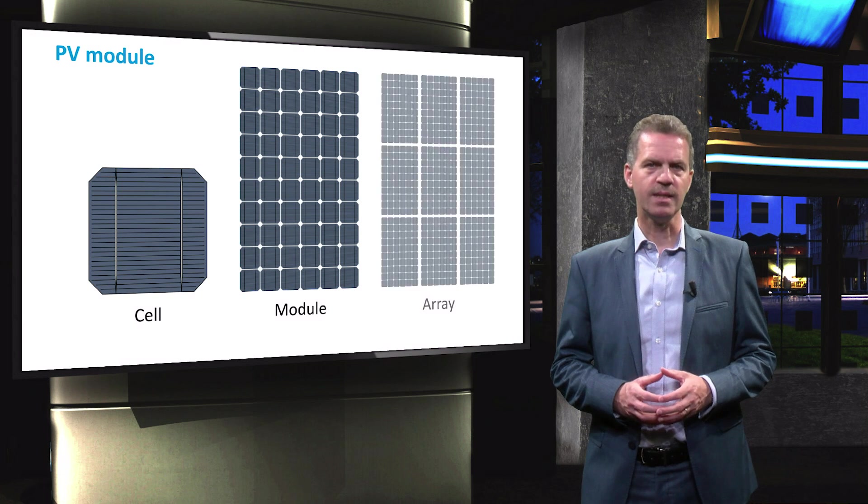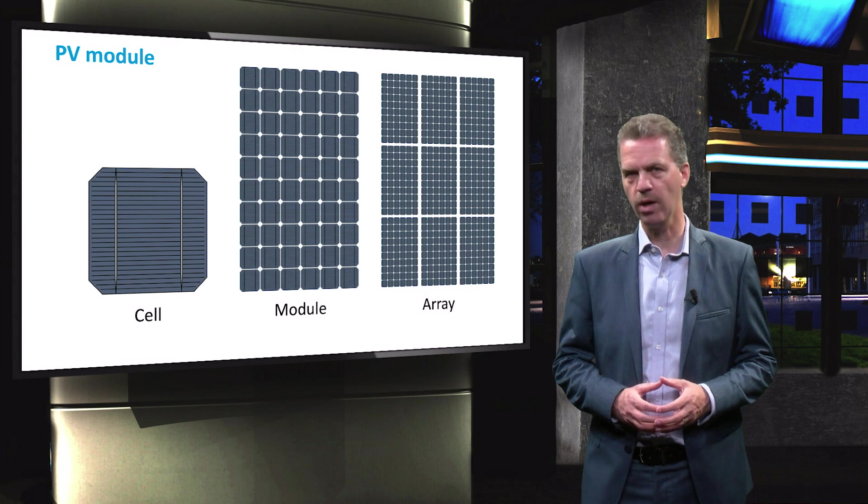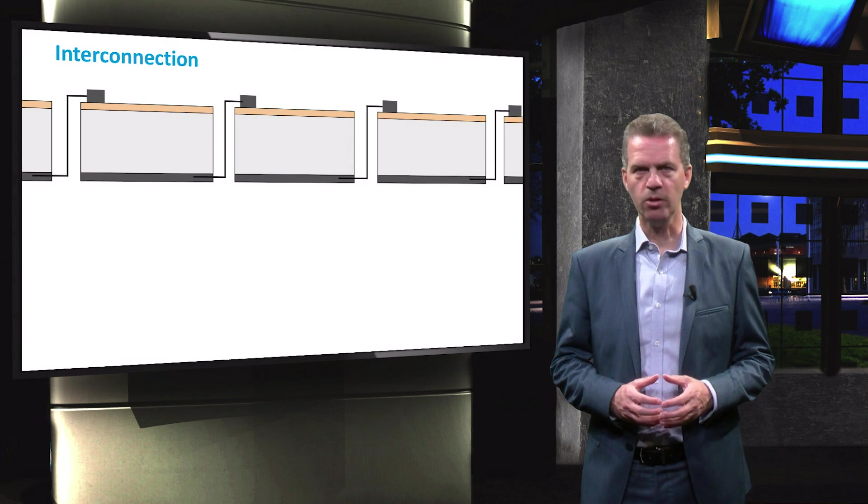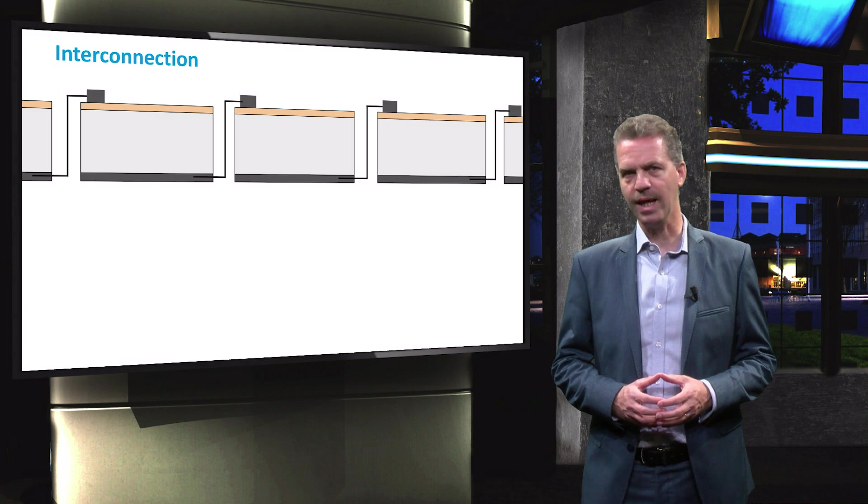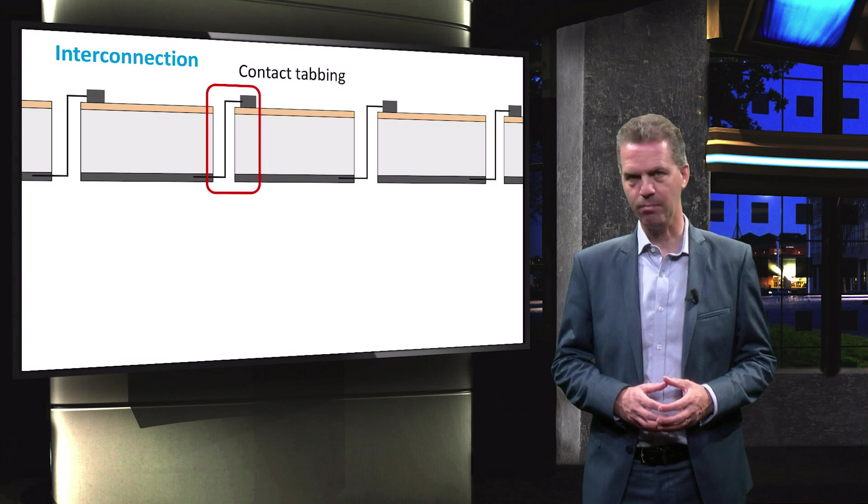In PV systems, these modules will again be interconnected to form an array. In order to connect individual solar cells in a module, the bus bars at the front side will be connected to the back contact of the neighbouring cell. This process is called contact tabbing.